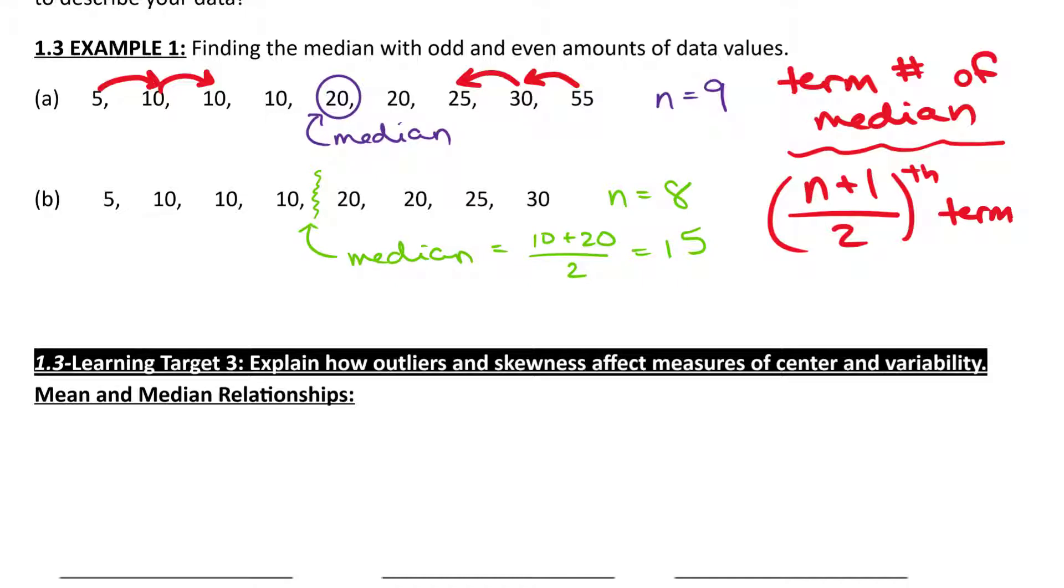So for example, with part A, we could say 9 plus 1 over 2. So 10 over 2, we get 5. Now obviously 5 is not our median, but this will tell us that the median is the 5th term. 1, 2, 3, 4, 5th term. That's our median.